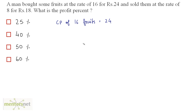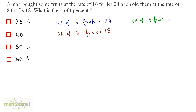We also have the selling price of 8 fruits which is 18. To calculate the profit, we need the cost price of 8 fruits, not 16. Since cost price of 16 fruits is 24, the cost price of 8 fruits equals half of 24, which is 12. So 12 is the cost price of 8 fruits.